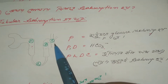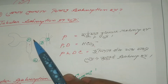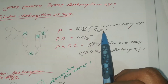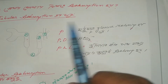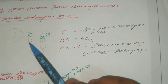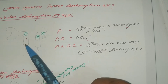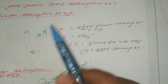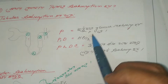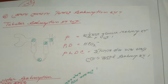Now, we know that the proximal convoluted tubule is where glucose reabsorption occurs. PD means the proximal convoluted tubule is the site for bicarbonate reabsorption. And PLDC means the most important thing is reabsorption across all segments.